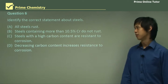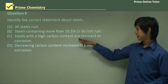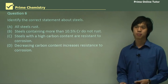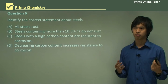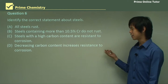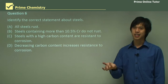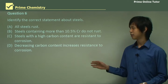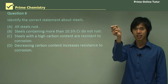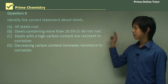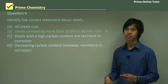Question: Identify the correct statement about steels. Option A — all steels rust — is not true, because stainless steel doesn't rust. Option B — steels with high carbon content are resistant to corrosion — is not true for all high-carbon steels; pig iron has high carbon content and corrodes readily. Option C — decreasing carbon content increases resistance to corrosion — is also not true, as there's a peak carbon level for corrosion resistance. The answer is D: steels containing more than 10.5% chromium do not rust — essentially stainless steels.